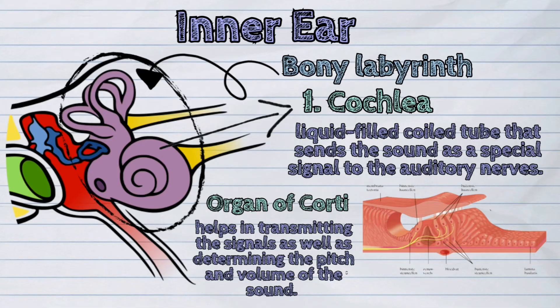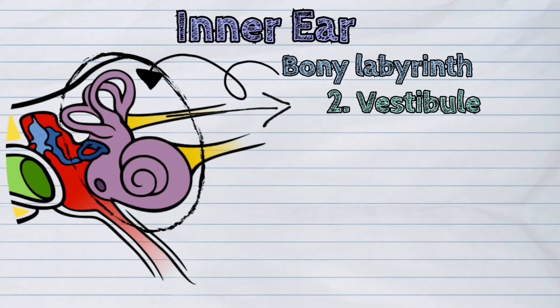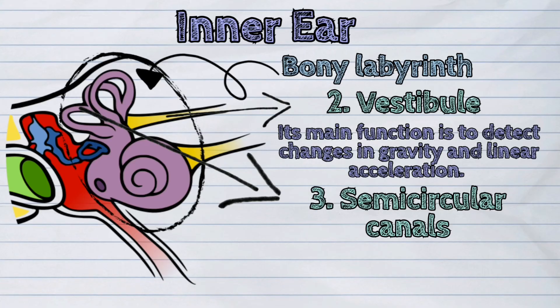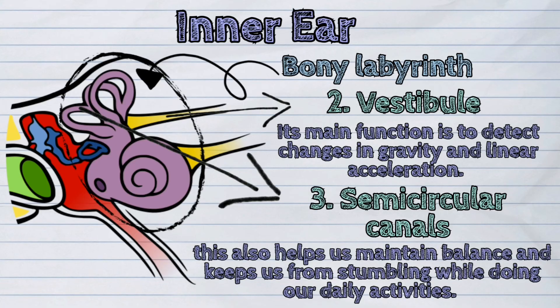The second bony labyrinth part is the vestibule. Its main function is to detect changes in gravity and linear acceleration. And the last bony labyrinth part is the semi-circular canals, which also helps us maintain balance and keeps us from stumbling while doing our daily activities.